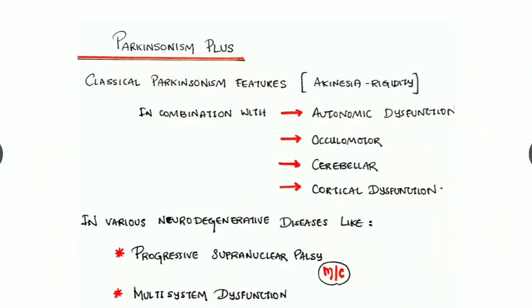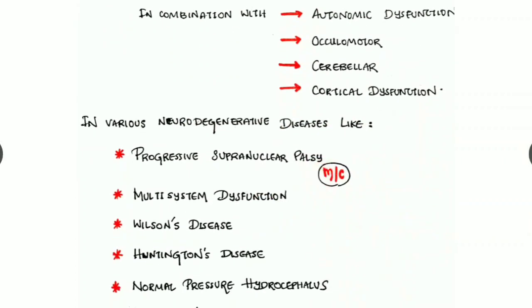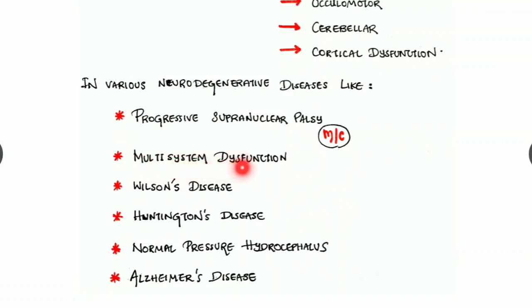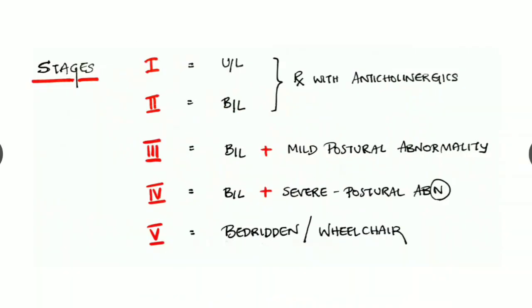Next we have to look what is Parkinsonism Plus. There are classical Parkinsonism features like akinesia, rigidity in combination with features like autonomic dysfunction, oculomotor dysfunction, cerebellar dysfunction, and even cortical dysfunction. This is seen in various neurodegenerative diseases like progressive supranuclear palsy, which is the most common disease where this Parkinsonism Plus is seen. It can be seen in multi-system dysfunction, Wilson's disease, Huntington's disease, normal pressure hydrocephalus, Alzheimer's disease, etc.